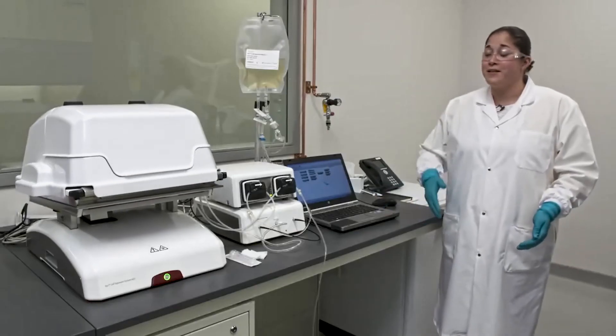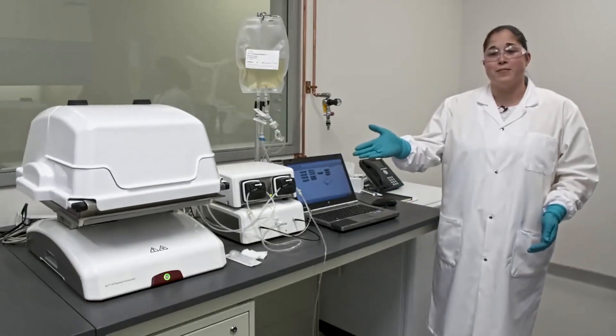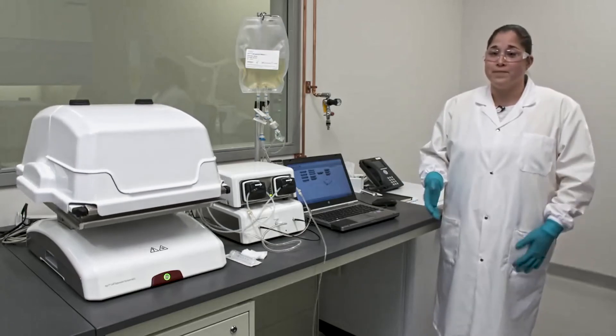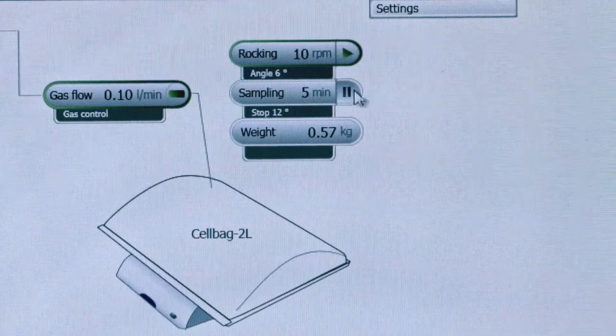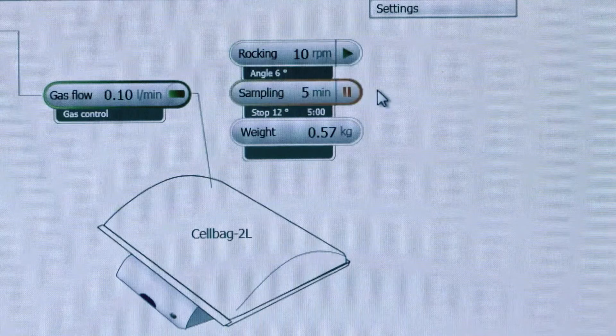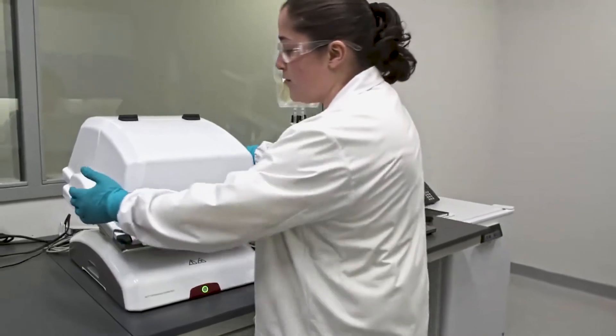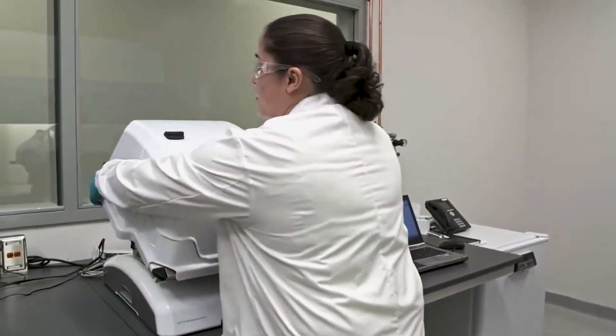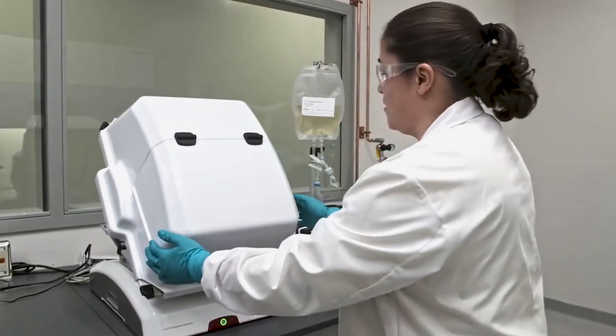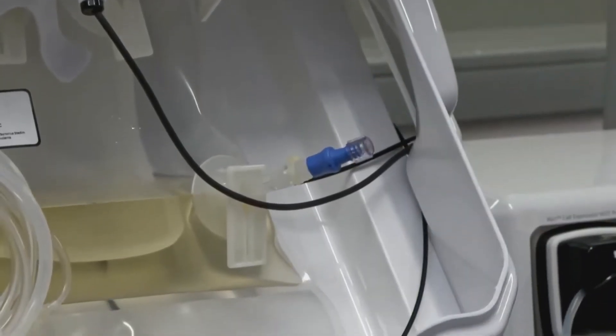During your cell culture process, after you've added your cells into your cell bag, you'll want to sample that cell bag. The first part of that process is to click sampling on Unicorn. This will have the rocker stop rocking. You can then go over and grabbing on the top, you'll put the rocker into sampling position. You'll open the cover and you're going to sample from the clave port.